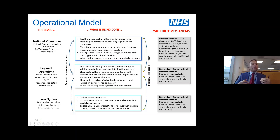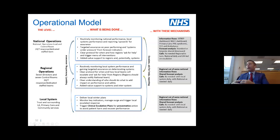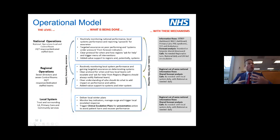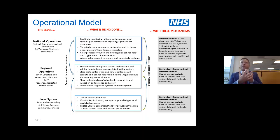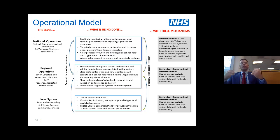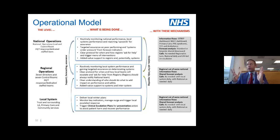The same principle applies to escalation. We've got a situation we may or may not be able to manage, but to avoid outcomes we don't want, we call for help. At that stage you may not know exactly what help you require, but you've called on others to support your decision making — enabling shared decision making so everyone has a common understanding of the situation, the range of solutions, and the expected outcome.